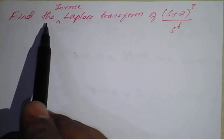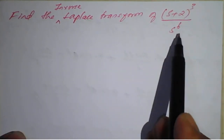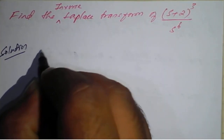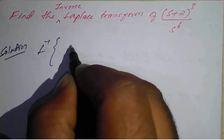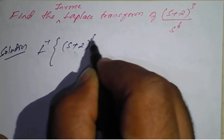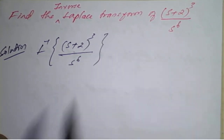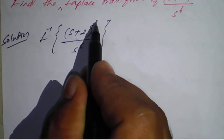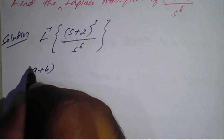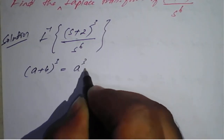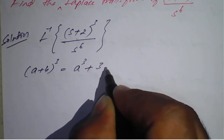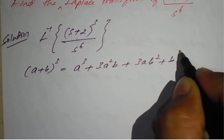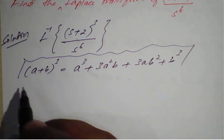Next problem: find the inverse Laplace transform of (s+2)³ / s⁶. This is not in direct form, so we need to expand (s+2)³ using the algebraic identity (a+b)³ = a³ + 3a²b + 3ab² + b³. Here a = s and b = 2.